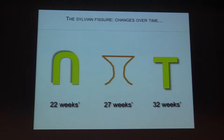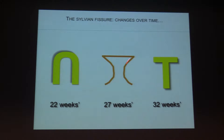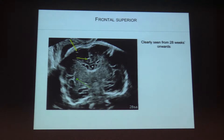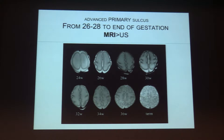At 32 weeks, we have the particular T-shape of the Sylvian fissure. The term of 27–28 weeks of gestation is very important because it is the turning point of this fissure — the moment when you can be sure the Sylvian fissure is normal by its typical shape. Before 28 weeks, ultrasound is sufficiently reliable to assess all fissures correctly, but after 28 weeks MRI will be better.